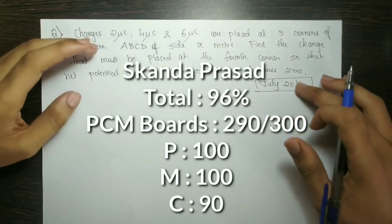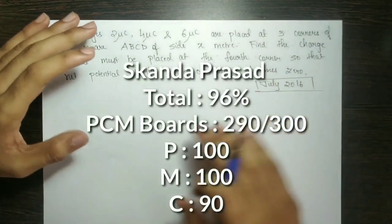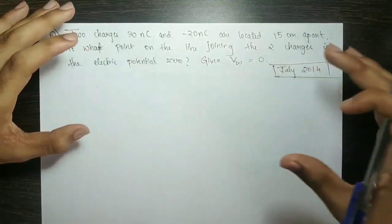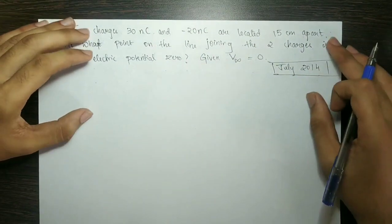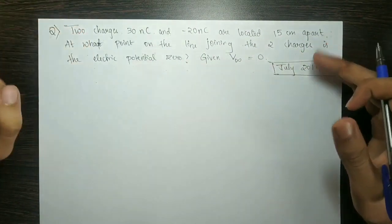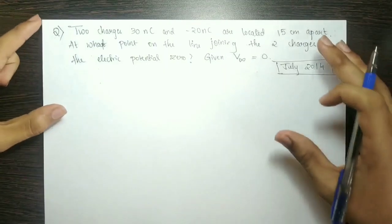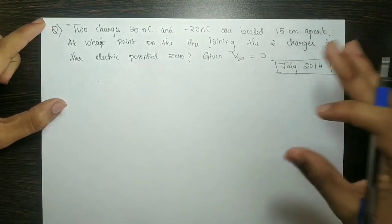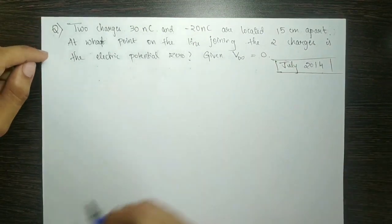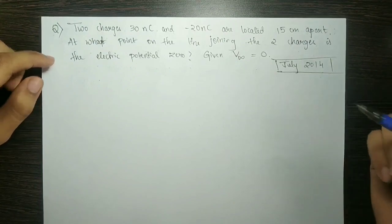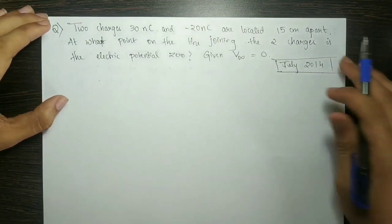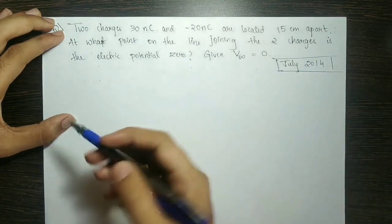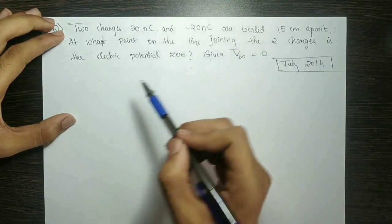In this board exam and supplementary paper, I will cover questions from July 2016 and July 2014. We have 2 electrostatics-based and 2 electric potential-based questions. Two charges — 30 nanocoulombs and minus 20 nanocoulombs — are located 15 cm apart. At what point on the line joining the two charges is the electric potential zero?